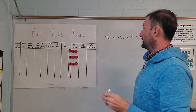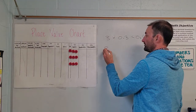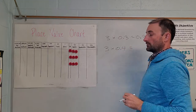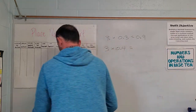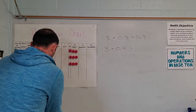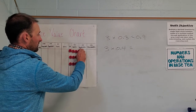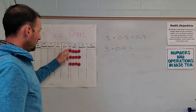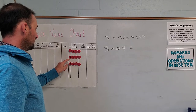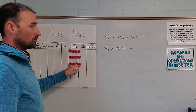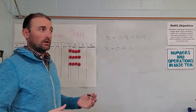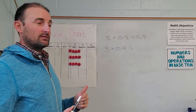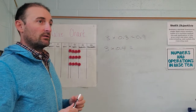Now what if I asked you to do three groups of 4 tenths? Seems simple enough. We'll take three groups and make them each 4 tenths. Counting them: 1, 2, 3, 4, 5, 6, 7, 8, 9, 10, 11, 12. I have 12 tenths. Thing is, 12 tenths is greater than 1.